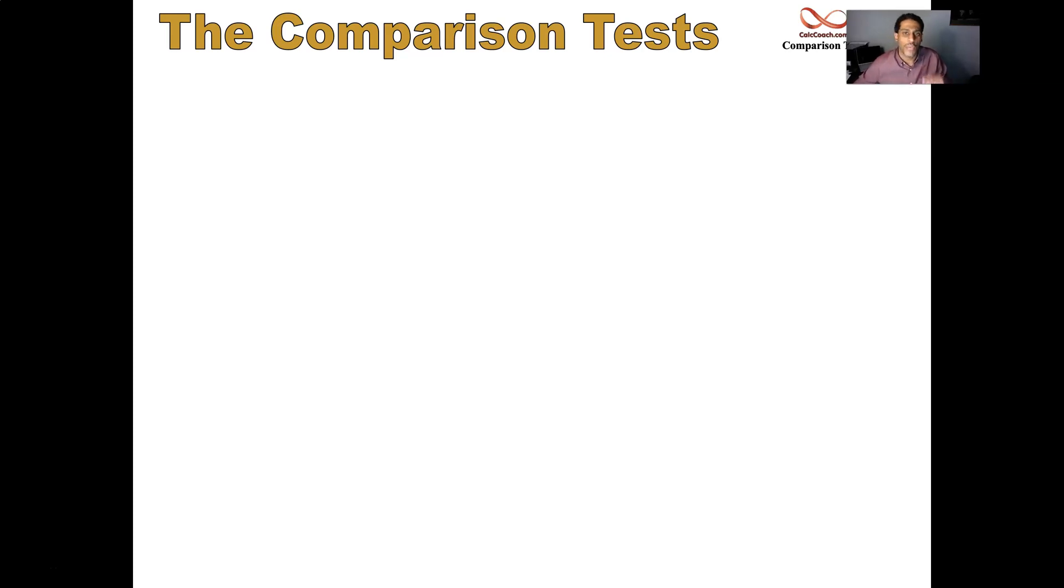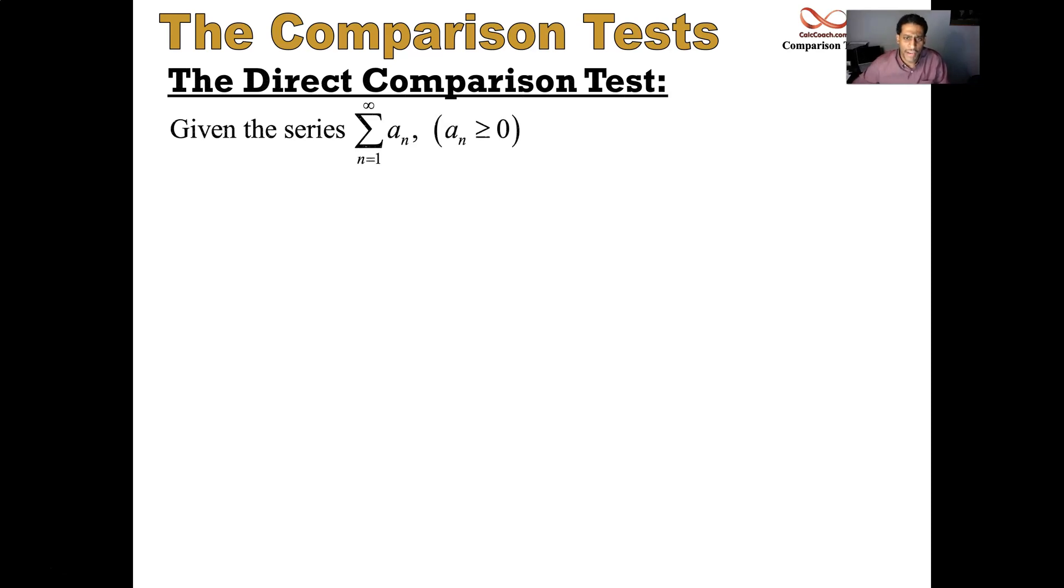In this video, we introduce the direct comparison test, and in the next video, we'll do some examples. So let's take a look at it. The direct comparison test is used to find out whether or not a series of all positive numbers is convergent or divergent.